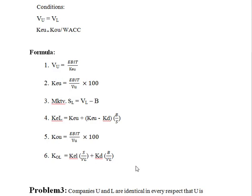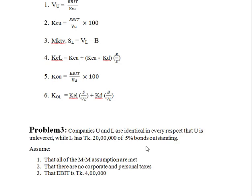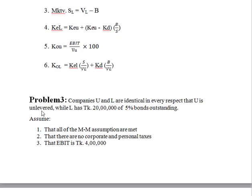I am going to apply this formula using the without-tax method, step by step. The problem states that companies U and L are identical in every respect, except that U is unlevered, while L has 20 lakh taka of 5% bond outstanding.